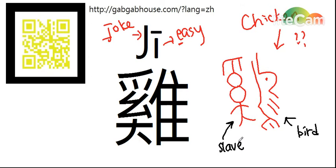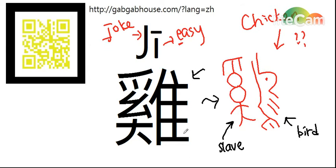So for the original meaning, it means a bird without freedom. What kind of bird has no freedom? It is a domestic bird. And nowadays we use this classic word as this one — it means chicken.